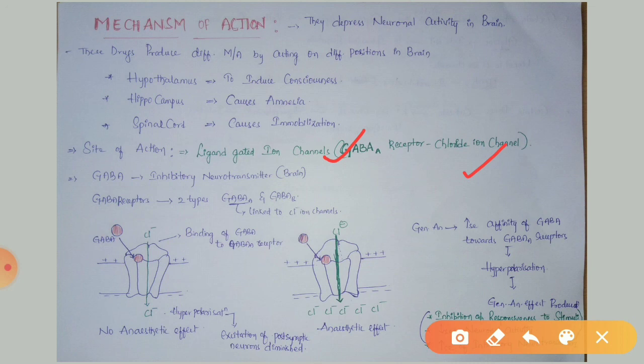and opens the chloride ion channel. Chloride ions from outside the cell enter into the cell. By the entry of chloride ions, the inside of the cell creates hyperpolarization. By hyperpolarization, excitation of the post-synaptic neuron diminishes. This is the normal condition.